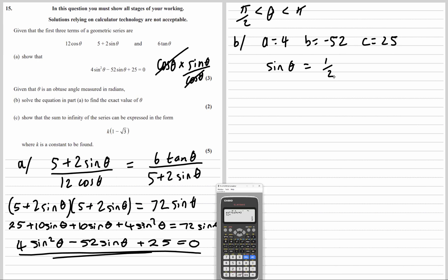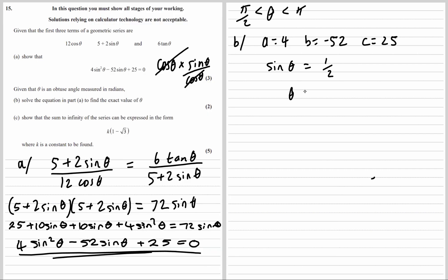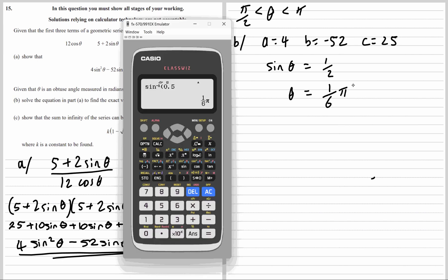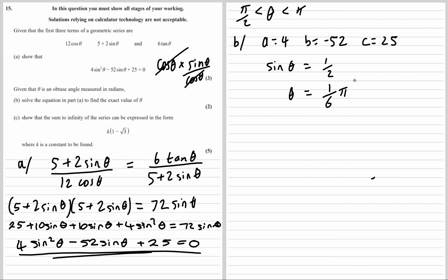So we're going to do inverse sine of a half, which gives 1/6 pi. That's too small — we don't want that one, we want the next answer. For sine, the other solution is 180 minus the first answer, or in radians pi minus the first answer, which is 5/6 pi. So as theta is obtuse, theta must be 5/6 pi.